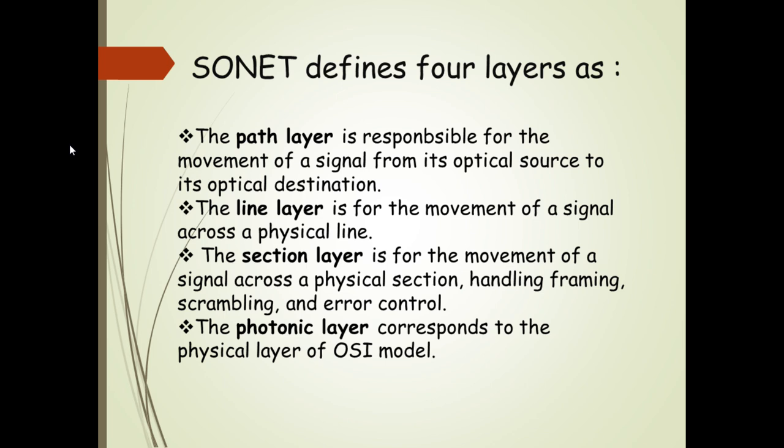How are the four layers defined? The path layer is responsible for the movement of a signal from its optical source to its optical destination. The line layer handles the movement of a signal across a physical line. The section layer handles the movement of a signal across a physical section and is responsible for framing, scrambling, and error control. Finally, the photonic layer corresponds to the physical layer of the OSI model.